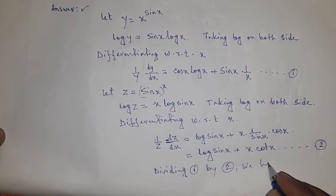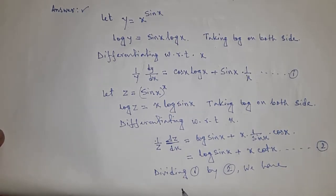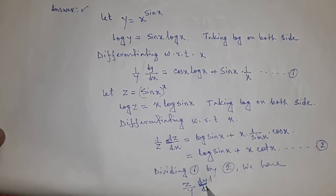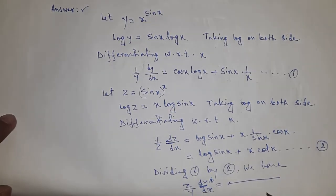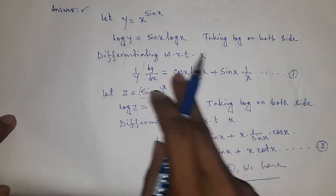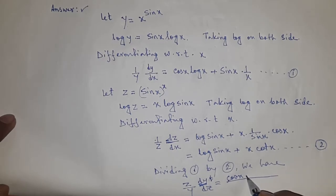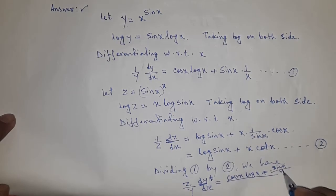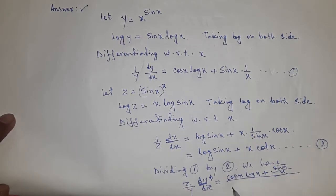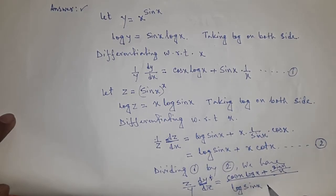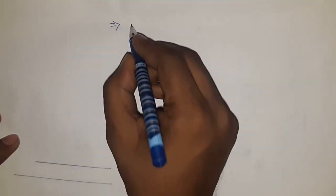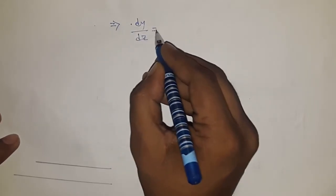Dividing equation 1 by equation 2, we have z by y times dy/dz on the left side. On the right side: cos x log x plus sin x by x, divided by log sin x plus x cot x.